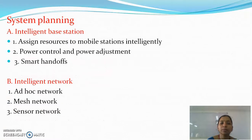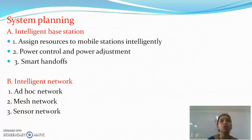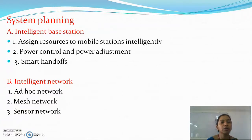Coming to system planning: intelligent base stations, intelligent networks, and smart resource assignment to mobile stations are needed. Power control and power adjustment must be in place, along with smart handoffs, ad hoc networks, and mesh sensor networks. All of these together — modulation schemes, type of antennas, smart antennas, and system planning — contribute to the efficiency of the spectrum. All these points must be considered while designing a cellular system. In the next lecture, we will continue with what is necessary for this cellular system.